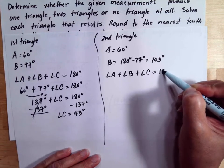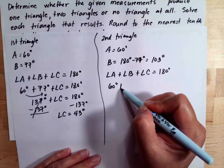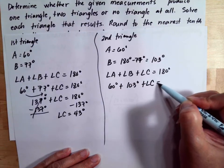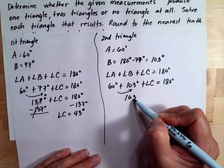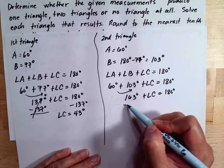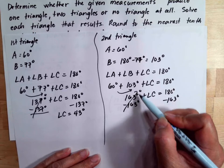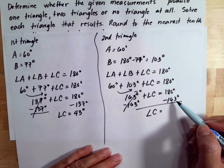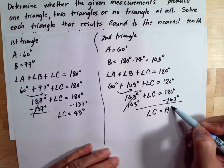For the second triangle, angle A plus angle B plus angle C equals 180 degrees. Angle A is 60 degrees and angle B is 103 degrees, so 163 plus angle C equals 180 degrees. Subtracting 163 gives angle C equal to 17 degrees.